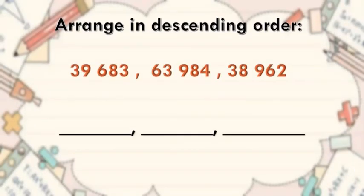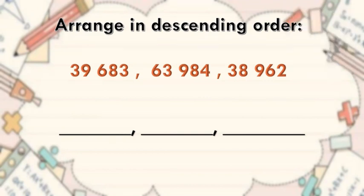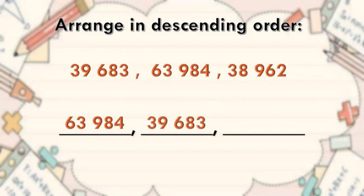Arrange in descending order: 39,683, 63,984, and 38,962. In descending order, the numbers are 63,984, 39,683, and 38,962.